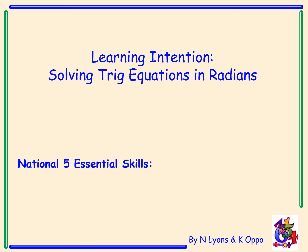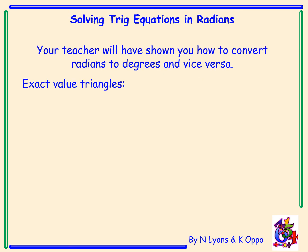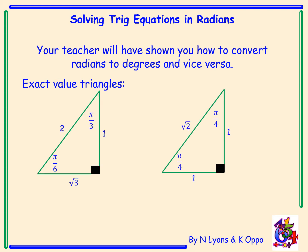Solving trig equations in radians. Your teacher will have shown you how to convert radians to degrees and vice versa. We can use this knowledge to rewrite our exact value triangles with radians instead of degrees. Here we have our 1, √3, 2 triangle with π/3 instead of 60° and π/6 instead of 30°, and our 1, 1, √2 triangle with π/4 instead of 45°.